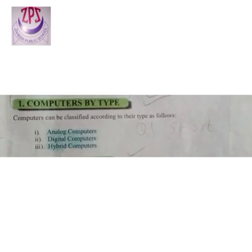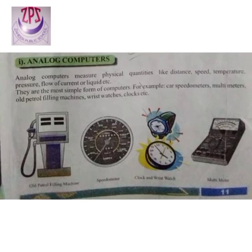The first category is computers by type. Computers by type are further classified into three types: first one is analog computers, second one is digital computers, and third one is hybrid computers. We will cover these three categories one by one in detail.